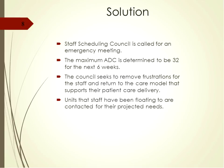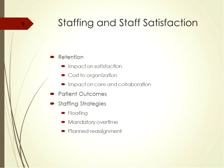The solution is that a staff scheduling council meeting is called as an emergency meeting. The maximum average daily census is determined to be 32 for the next six weeks. The council seeks to remove frustrations for the staff and return to the care model that supports their patient care delivery. Units that staff have been floating to are contacted for their projected needs.